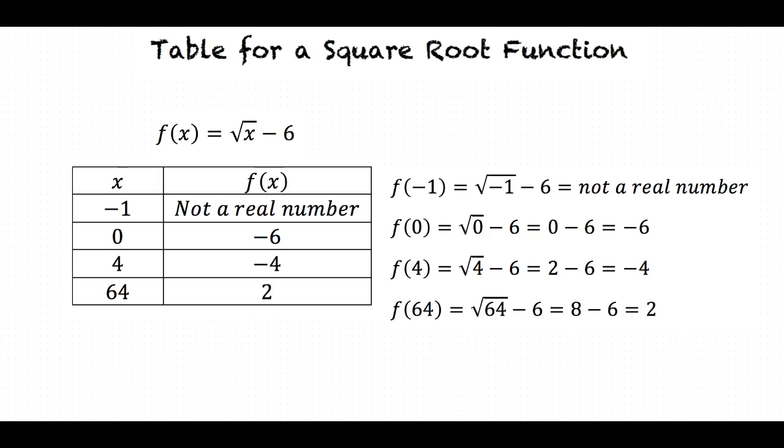In order to create a table for a square root function, we first create two columns and fill the left one with values of x if they are not already provided. Then we solve the function for those values of x and place the results in the right column.